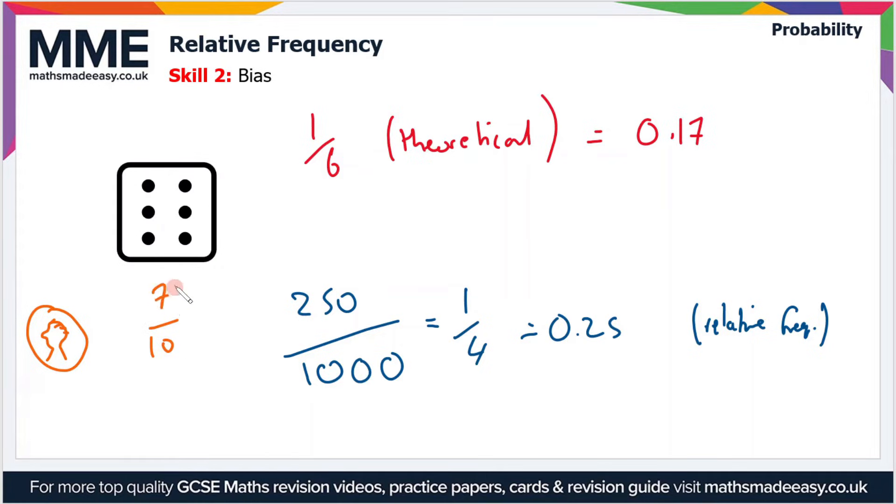and I get 7 out of 10 that are heads, then it might not be clear whether or not that's biased, because I've not done enough trials. So it could just be coincidence that I've got 7 out of 10 which are heads.